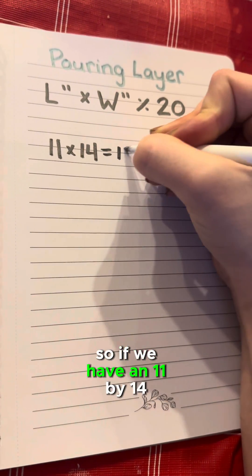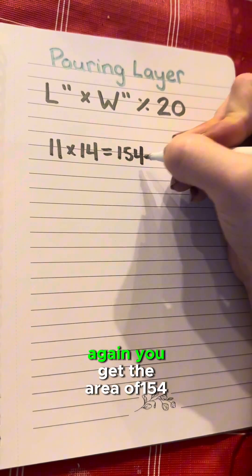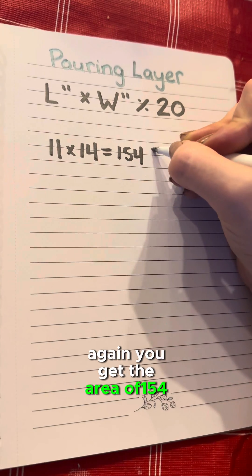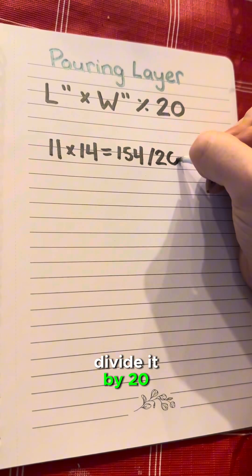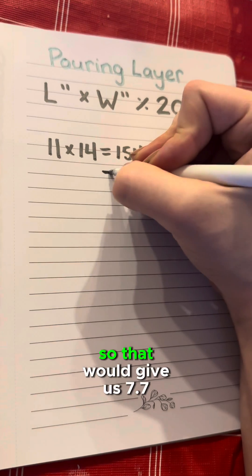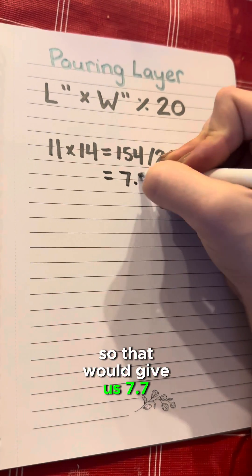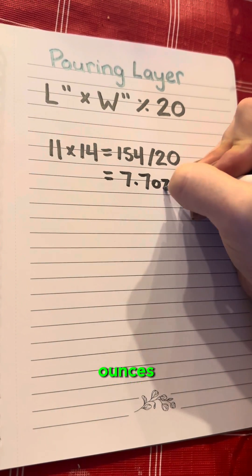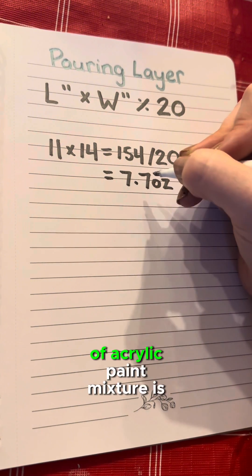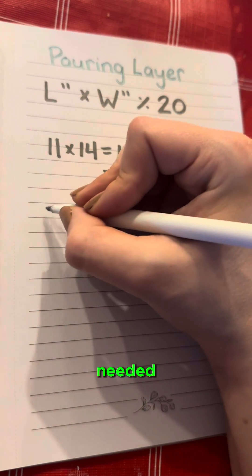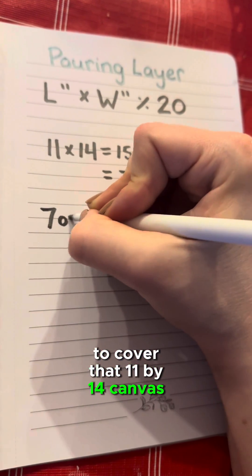So if we have an 11 by 14 canvas again, you get the area of 154, divide it by 20. That would give us 7.7 ounces of acrylic paint mixture is needed to cover that 11 by 14 canvas.